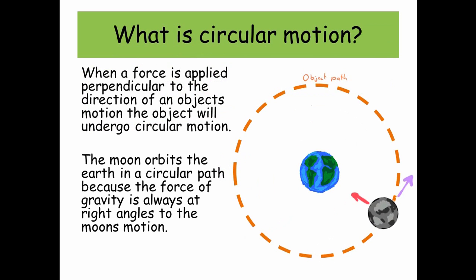When a force is applied perpendicular to the direction of an object's motion, the object will undergo circular motion. The moon orbits the earth in a circular path because the force of gravity is always at right angles to the moon's motion.